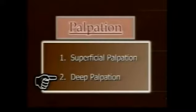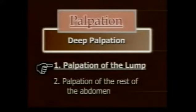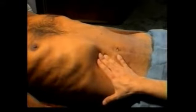Now let us proceed to deep palpation, which includes detailed palpation of the lump first, then palpation of the rest of the abdomen. Before palpating the lump in detail, first determine whether the lump is intra-abdominal or extra-abdominal. Feel the swelling, keep your hand at the lower border, and ask the patient to take deep breaths. If the swelling moves with respiration, it is definitely intra-abdominal. If it does not move, it may be either parietal or intra-abdominal. Then ask the patient to raise the neck, making the abdominal muscles taut. If the swelling becomes difficult to feel and less prominent, then it is intra-abdominal.